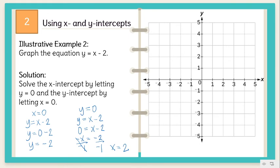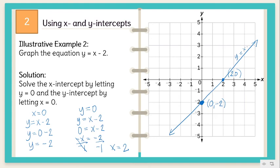Our Y intercept is negative 2. From 0, we're going to move 2 units below — this is our Y intercept. For our X intercept, which is 2, from 0 we're going to move 2 units to the right. The coordinates for the Y intercept are (0, negative 2), and for the X intercept we have (2, 0). Now we have the two points — let's connect them to form a line, and write the equation Y is equal to X minus 2.